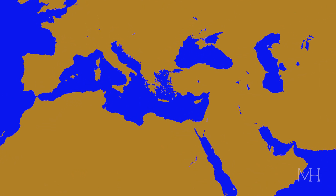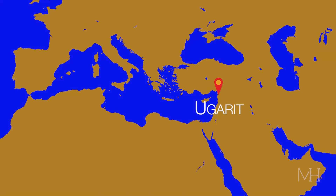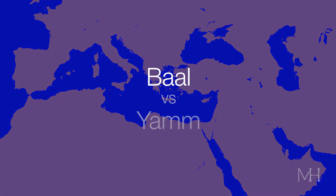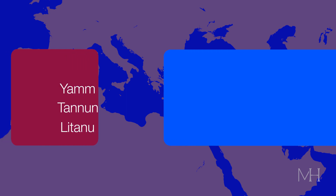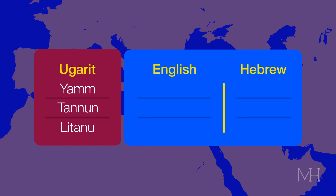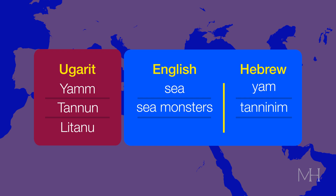In this case, scholars know the imagery comes from the literature of ancient Ugarit, where the god Baal battles Yam, who is portrayed as a chaotic churning sea, and a terrifying sea dragon named Tanun or Litanu. These terms are equivalent to the Hebrew words in the psalm: 'You divided the sea (Yam) by your might. You broke the heads of the sea monsters (Taninim) on the waters. You crushed the heads of Leviathan (Liyatan).'